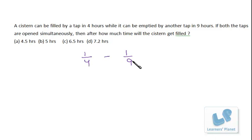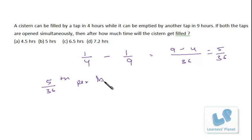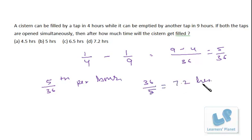This is the inlet pipe and this is the outlet pipe. Since both pipes are working opposite to each other we put a negative sign. Per hour the tank is getting filled by 5/36 part of the tank. That means to fill the tank completely it will take 36/5, that is 7.2 hours.